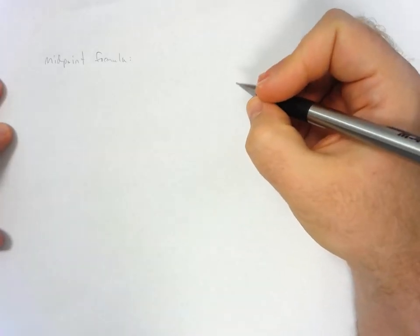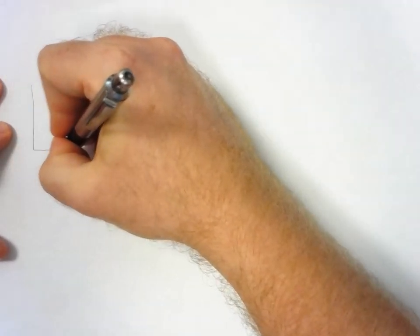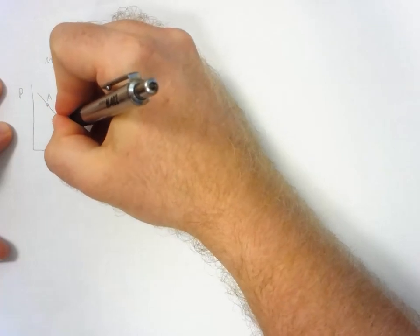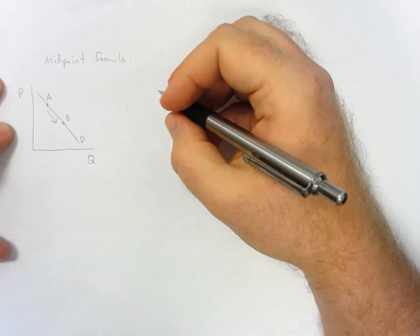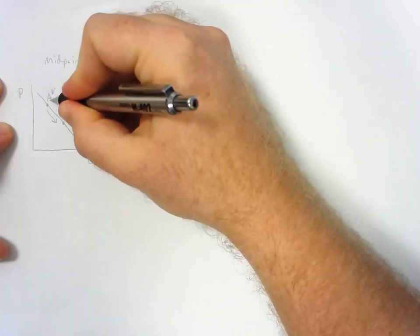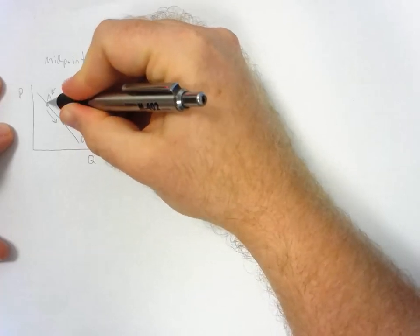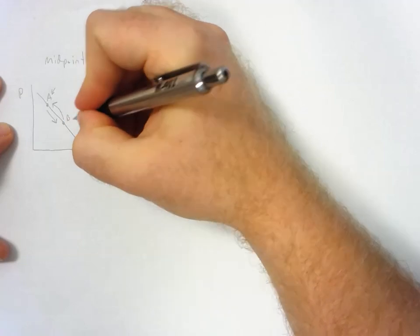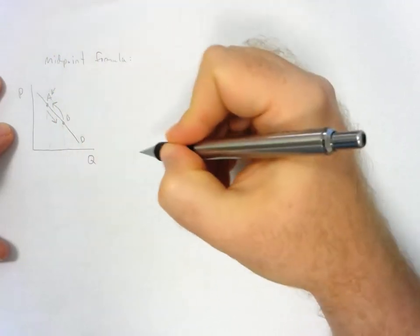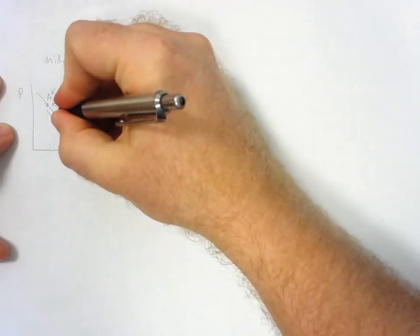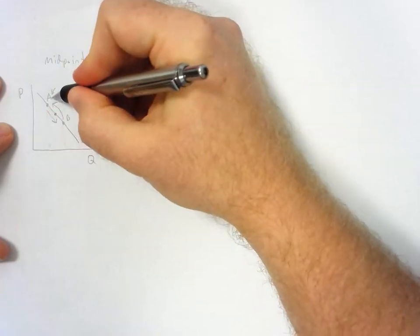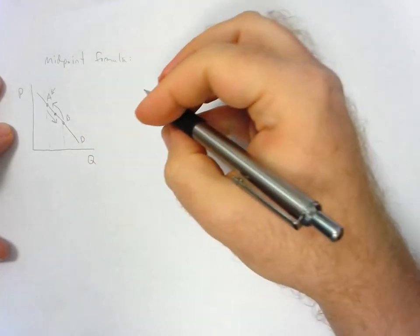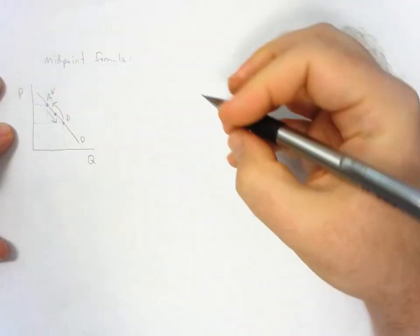If we sketch a typical supply and demand graph, we may start at point A and move to point B. If we calculate elasticity moving from A to B we get one value, but moving from B to A we get a different value. However, if we use the midpoint formula, we get the same elasticity value regardless of which direction we move.